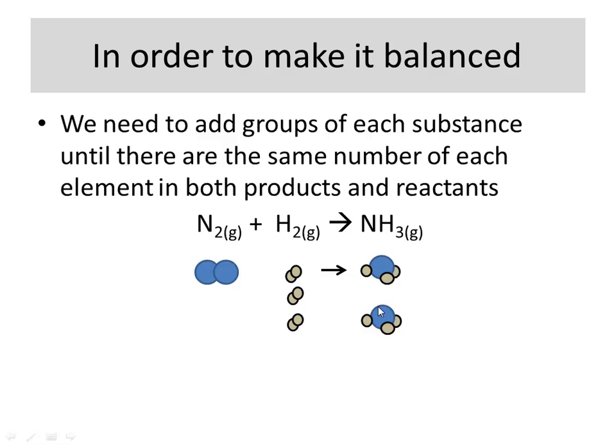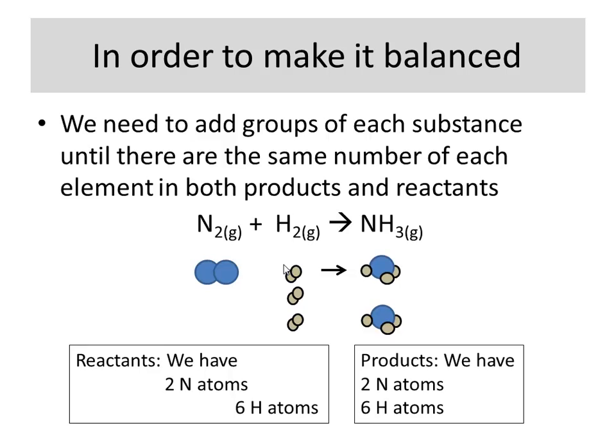So, now I have a balanced equation. I have one, two nitrogens on my product side, one, two nitrogens in my reactant side. I have one, two, three, four, five, six hydrogens in my product side. And I have one, two, three, four, five, six hydrogens in my reactant side. So, this is a balanced equation. I have the same number of each atom on both sides.